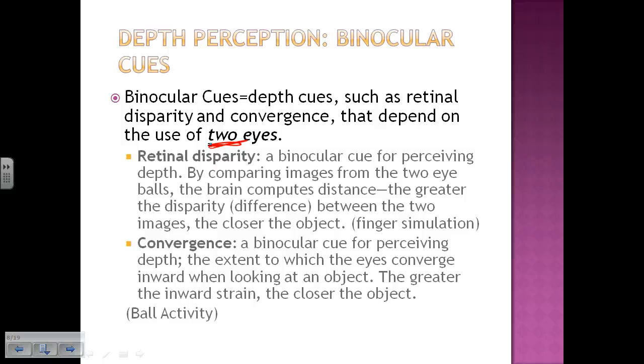Convergence is another binocular cue for perceiving depth. Convergence, think of things converging, is them coming together. So think about if you take your fingers and you put a finger at the tip of your nose. Now try to look at the tip of your nose as your eyes come in or converge inward. That's convergence. The greater your eyes have to strain inward, that tells your brain this object is really close, like hey my finger is right at the tip of my nose.